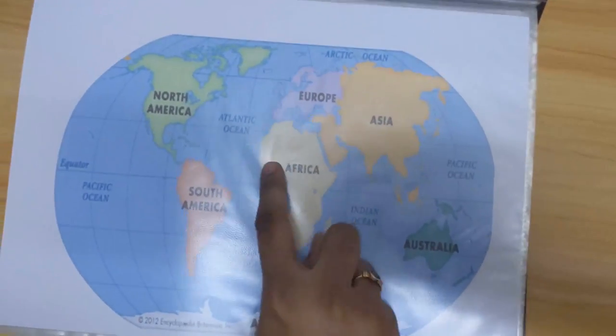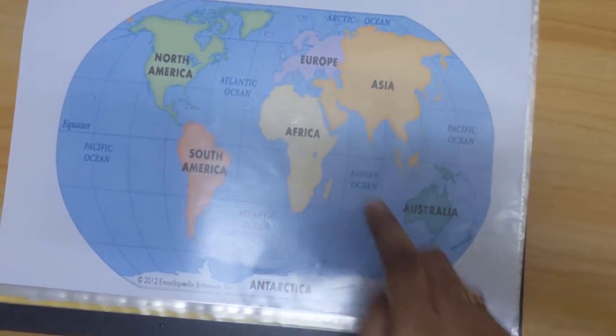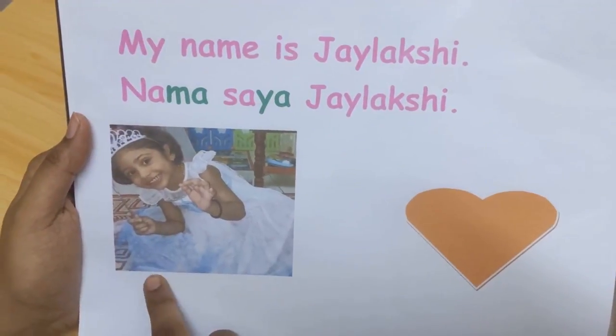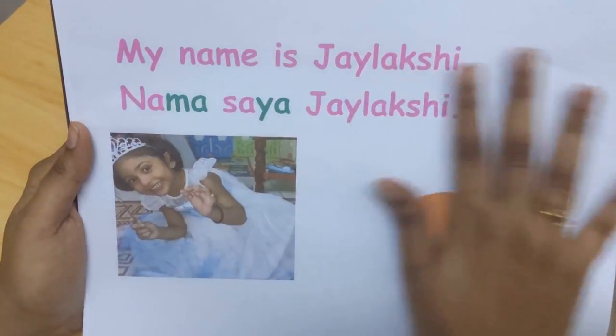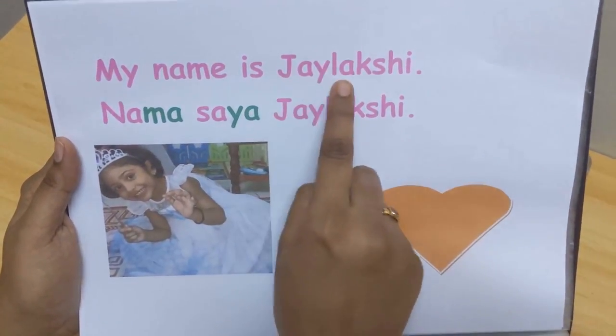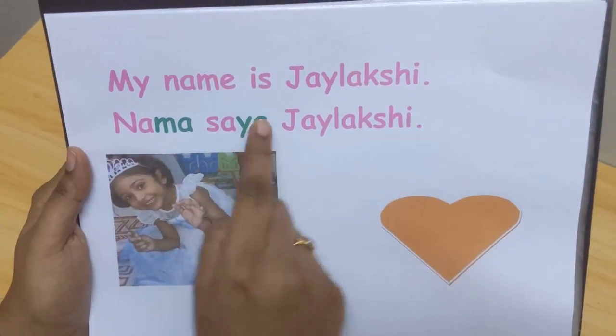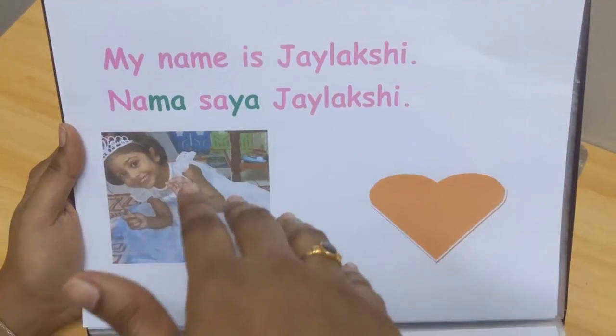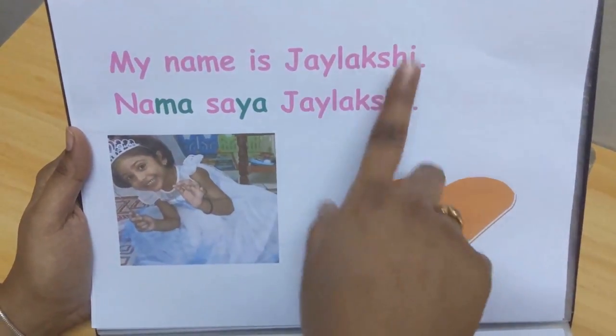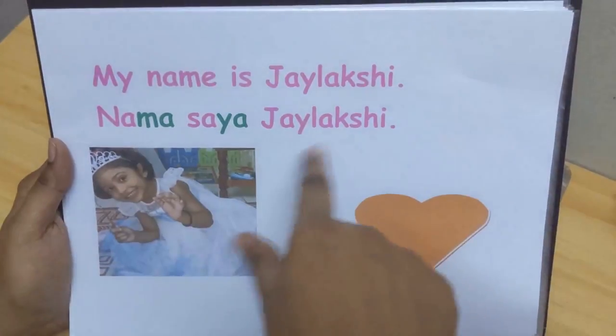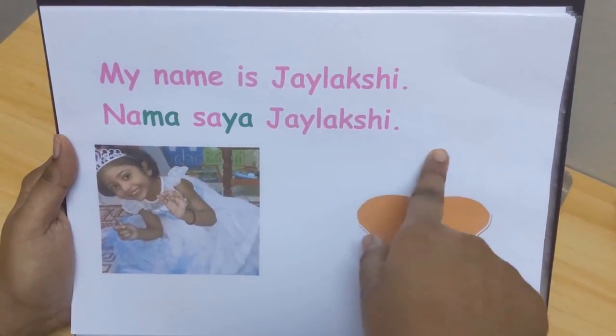This is her name. Obviously you change it to your own child's name, put in their own photo, and she loved this page a lot. So she goes to say my name is Jaya Lakshmi, and then she says nama saya Jaya Lakshmi. This is actually quite good. You can go on to add age, hobby, father's name, mother's name. A good one will also be a phone number, like father's phone number, mom's phone number for emergencies.